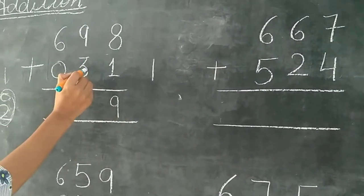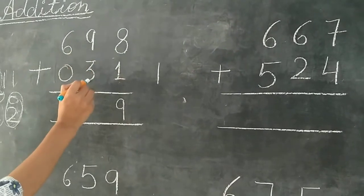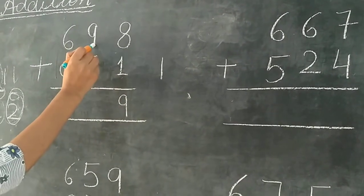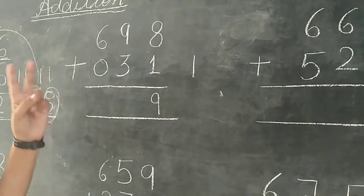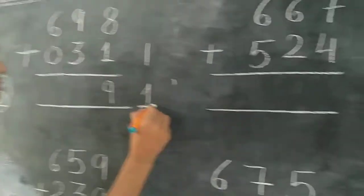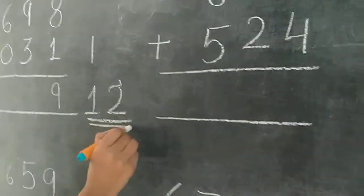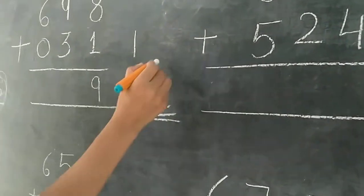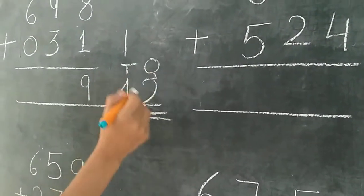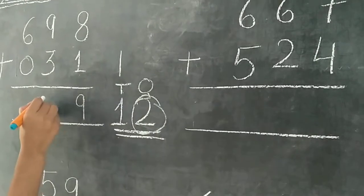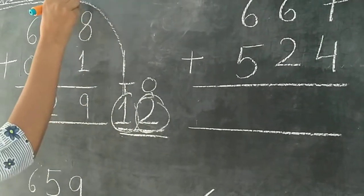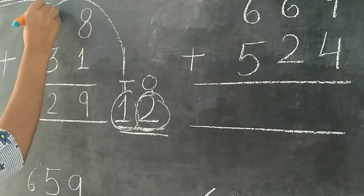9 plus 3. Aapko 9 mein 3 add karna hai. So we have to count after 9: 9, 10, 11, 12. So we have to write 1s and 10s. We write 1s here. And 10s is our carry — 1 is our carry.